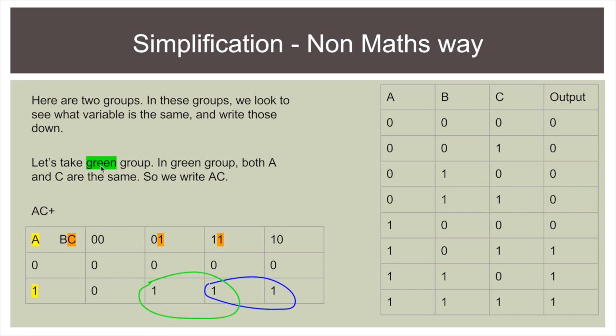So we'll take the green group first. And here's the green. And we want to write down the variables that stay the same. So in the green group, A is the same because 1 doesn't change in this row.